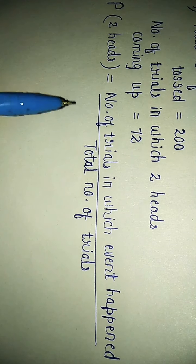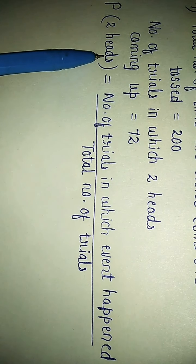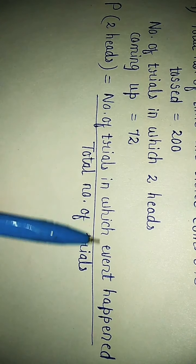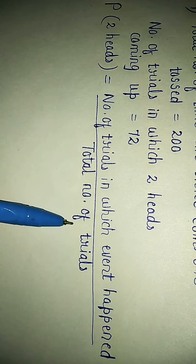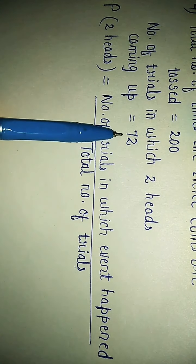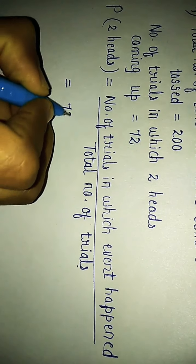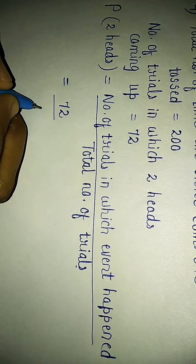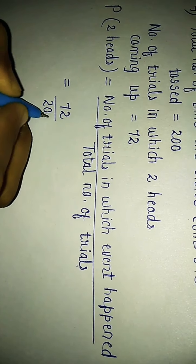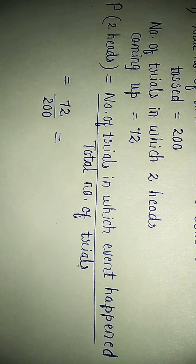We have formula of probability. Probability here of 2 heads coming up is number of trials in which event happened divided by total number of trials. What are number of trials in which event happened? They are 72. So, we will write 72 divided by what are total number of trials? They are 200.